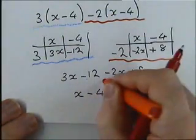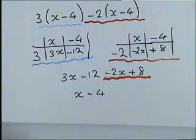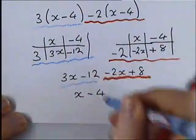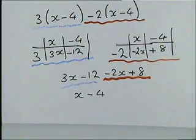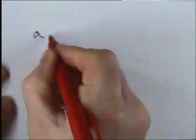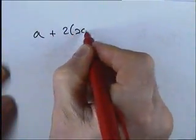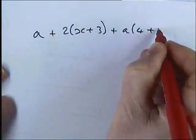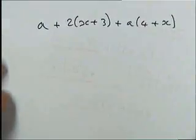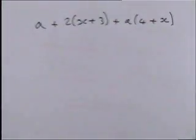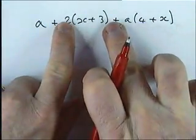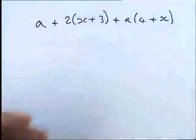Those are the grade C examples — two types. Obviously questions could be made harder by combining both types. For example: a + 2(x + 3) + a(4 + x). You just think of it as one thing, plus that bracket expanded, plus that bracket expanded, then simplify.